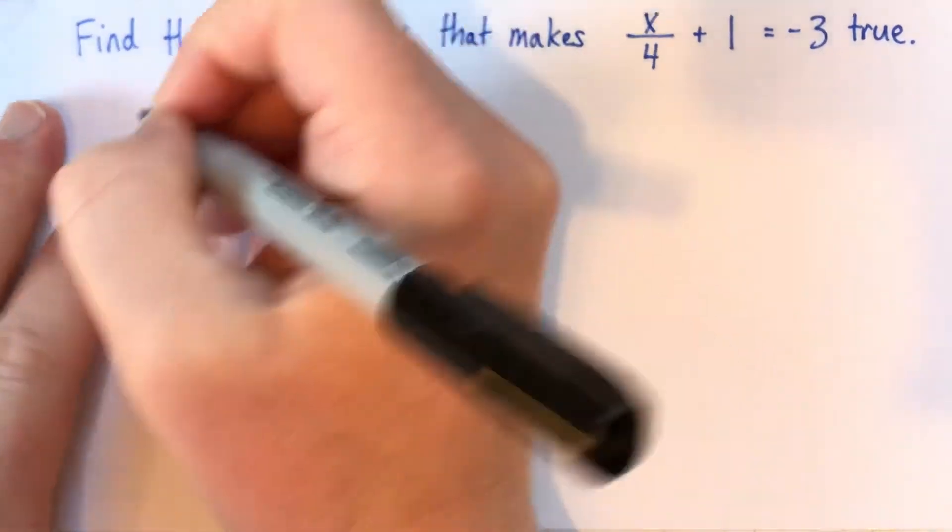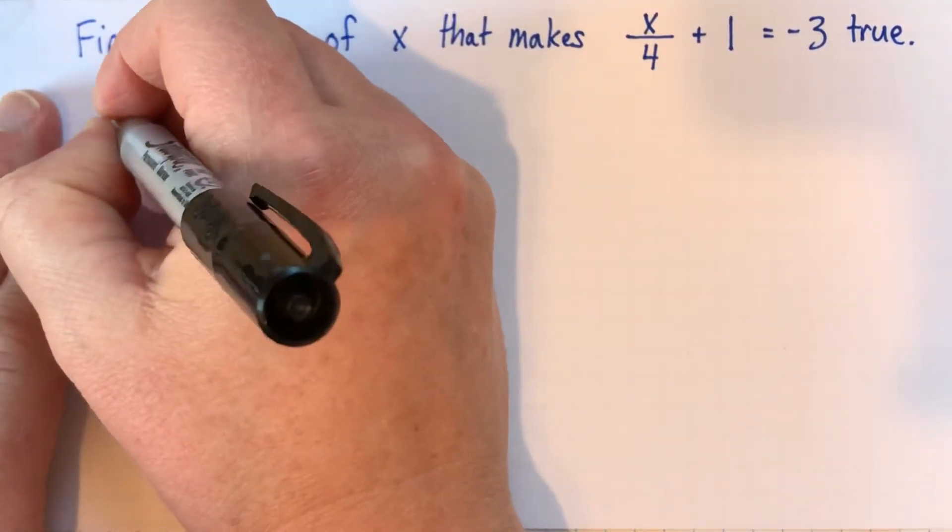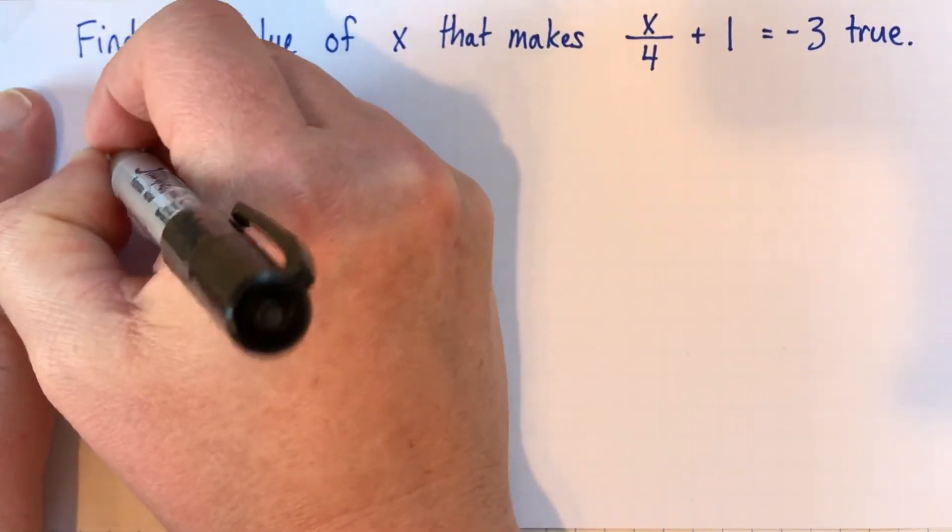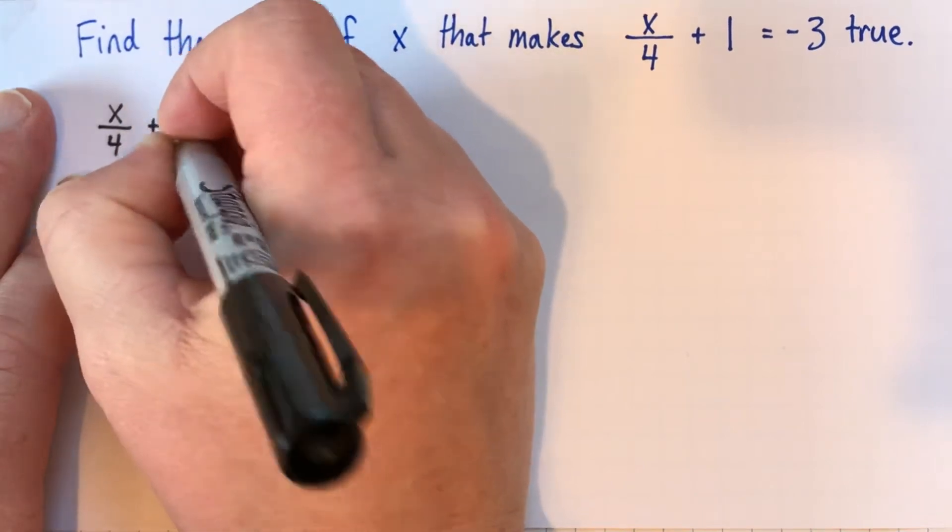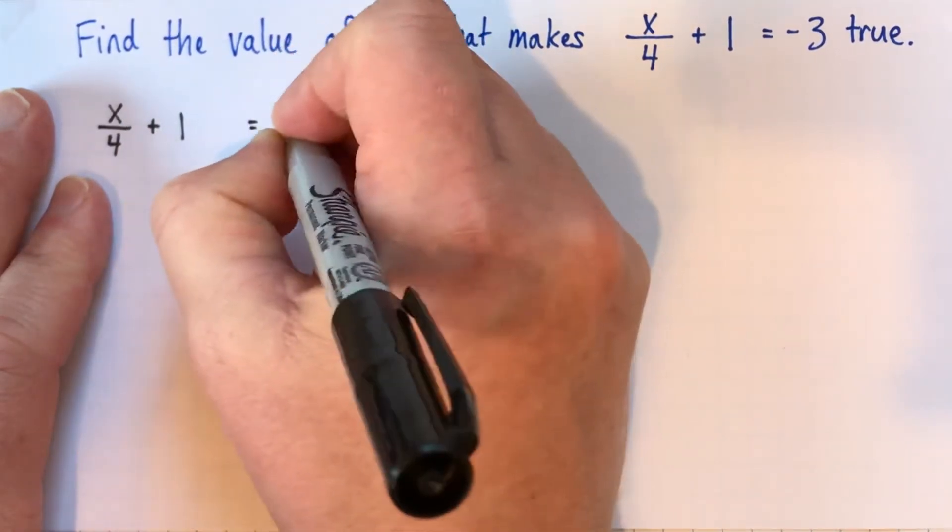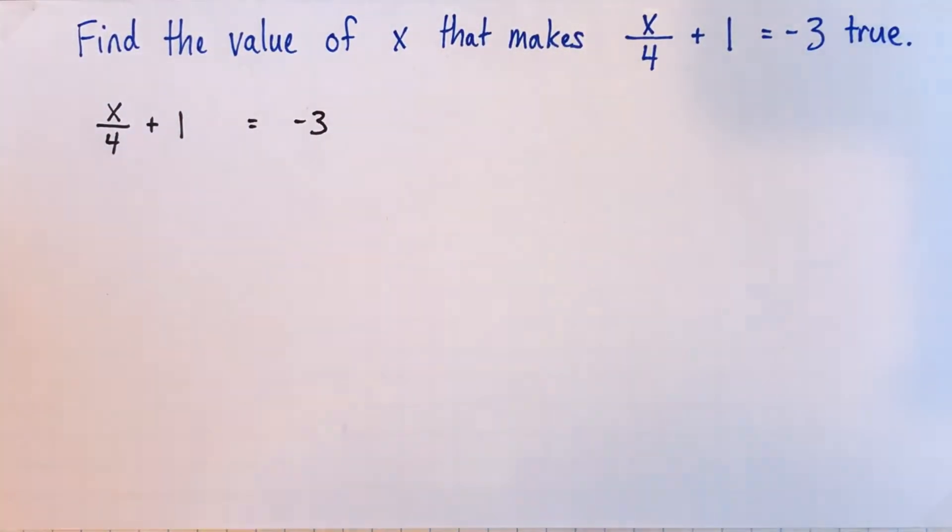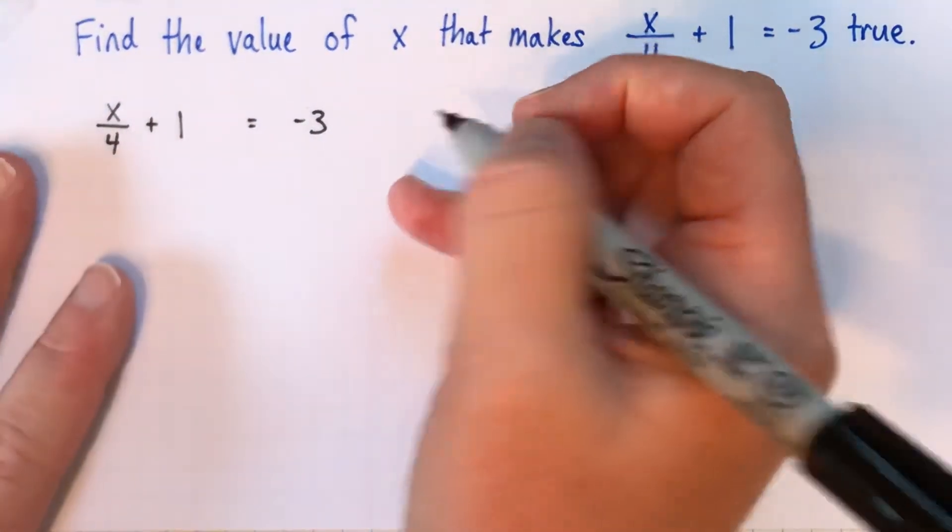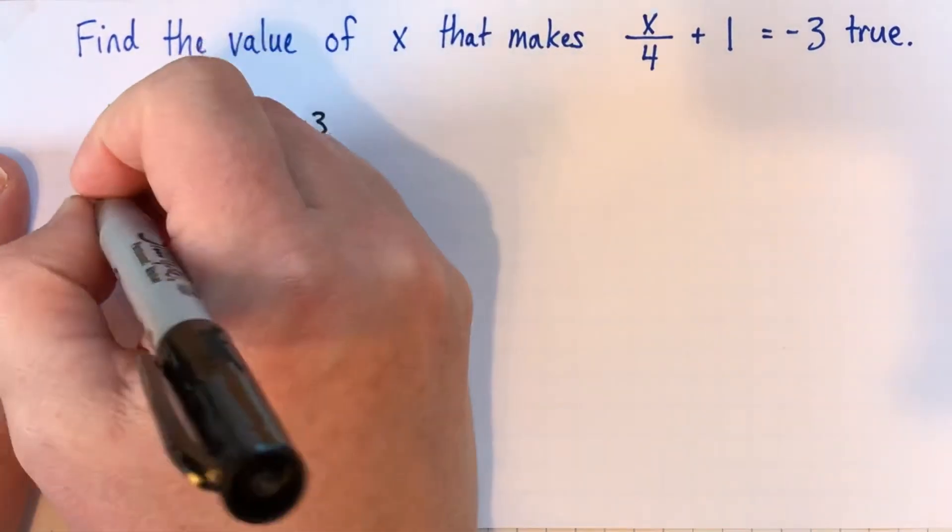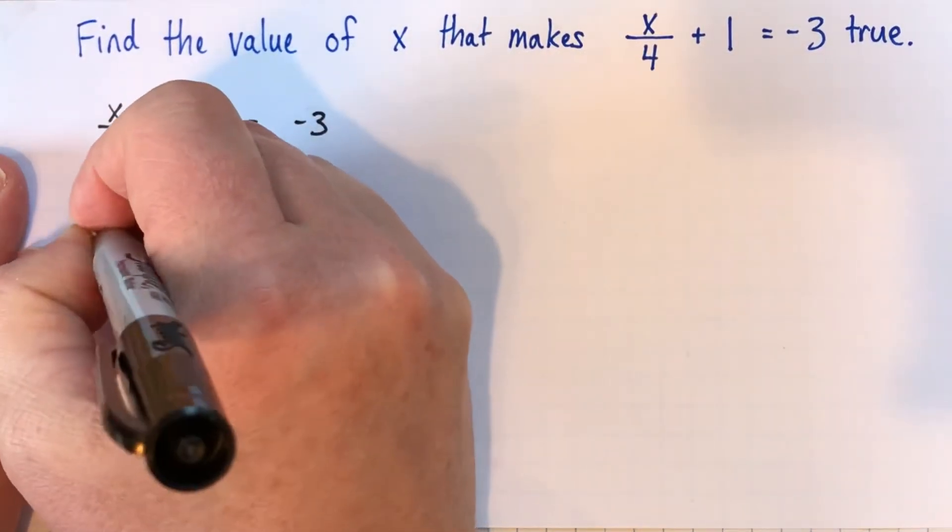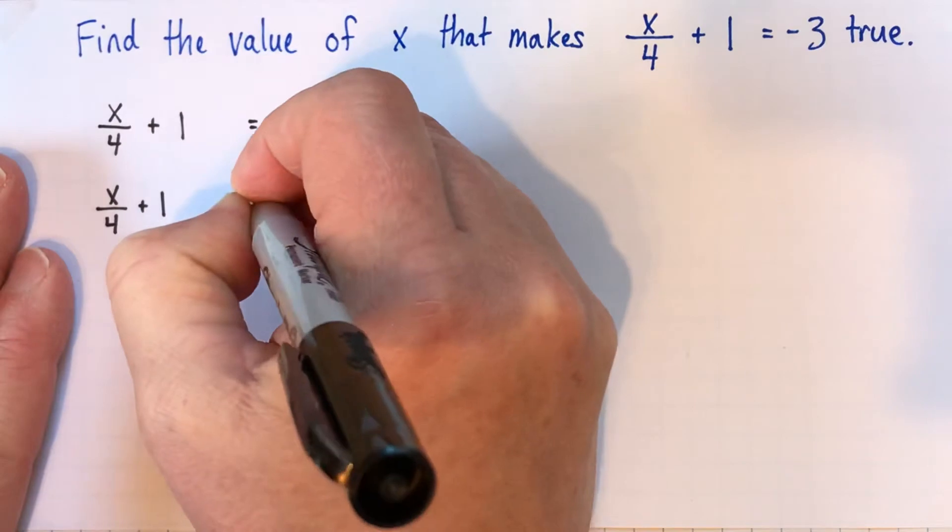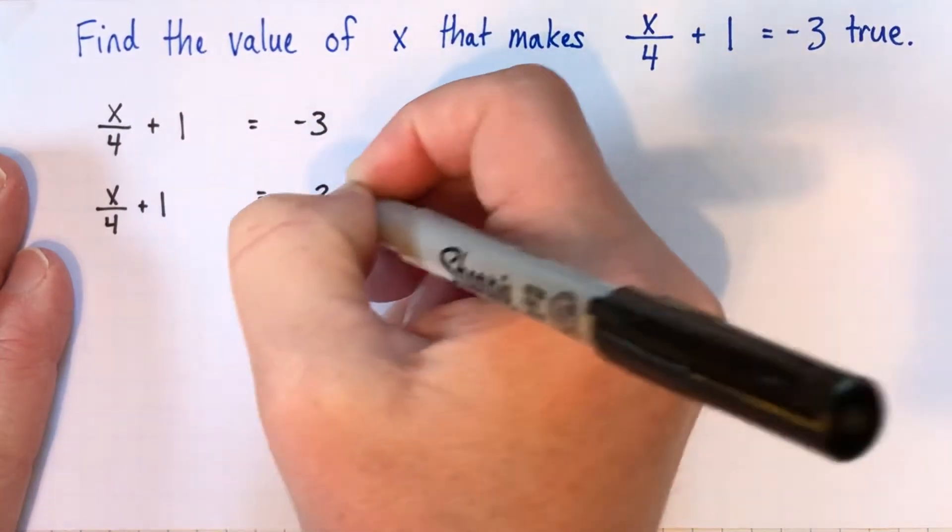So we'll start off, copy down our equation. We've got x divided by 4 plus 1 is equal to negative 3. We're going to try to isolate x or to get x all alone. So first of all, we'll get rid of this plus 1 here.